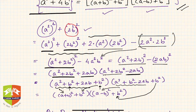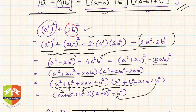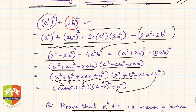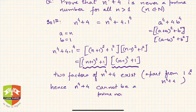So hence we learned this particular identity called Sophie Germain Identity, wherein fourth powers are factored. Note that there has to be a 4 — so a to the power 4 plus 4 times b to the power 4 can be expressed in those two factors. Now let us see an application of this identity.